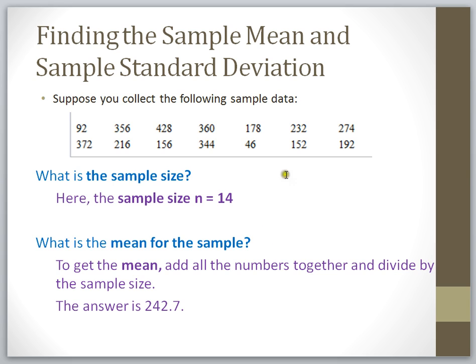In this next example, we're going to look at how to find a sample mean and a sample standard deviation given a small set of data. I'm going to show you how to do this by hand, but most of the time we don't calculate sample standard deviations or even means by hand. Usually we type these values into Excel, StatCrunch, SPSS, or whatever you want to use. However, it's very important to understand the process of calculating this so you can see what's really going on.